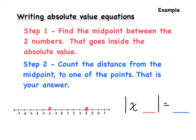When writing absolute value equations from a number line with two points, follow two steps. Step one: find the midpoint between the two numbers — that goes inside the absolute value. For example, with points 4 and negative 2, the midpoint is positive 1, so that goes inside the absolute value. Step two: count the distance from the midpoint to one of the points — that is your answer. From 1 to 4 is a distance of 3.